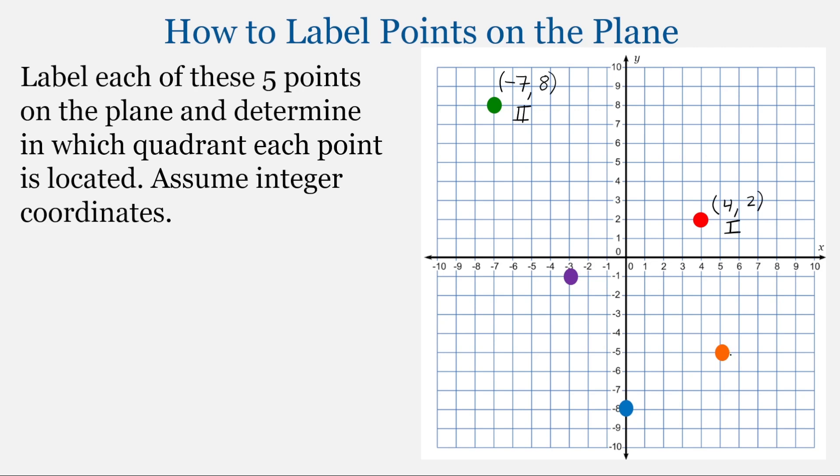Moving on to the orange point. Here our x-axis is 5. And then moving to the y-axis, we're at negative 5. And this is quadrant 4.